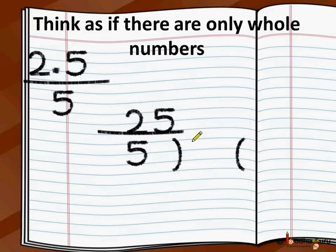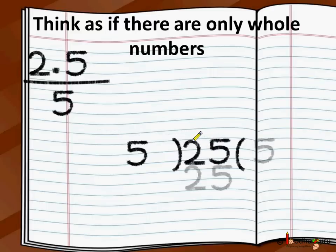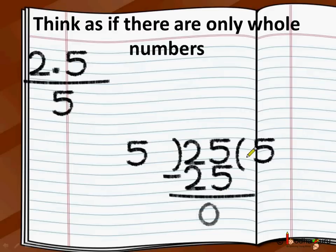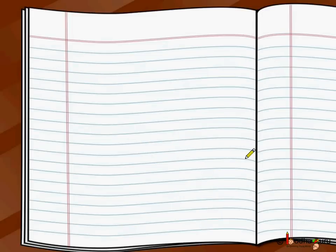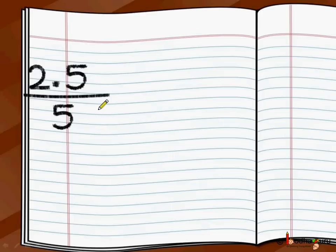We do 25 divided by 5. That is very simple when dealing with whole numbers. 5 fives are 25. 25 minus 25 is 0, so the answer is 5. But what about the decimal point? Where are we going to put it in the result? There is one decimal place in the dividend, so the quotient would also have one decimal place.